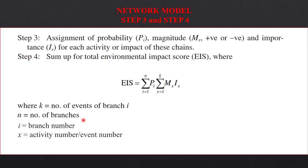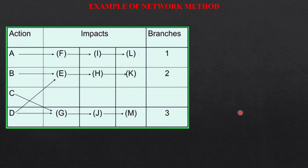Step three, assign the probability, magnitude and importance for each activity or the impact of this chain. And step four, calculate total environmental impact score by using this formula. Now we go for an example.